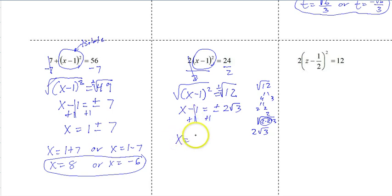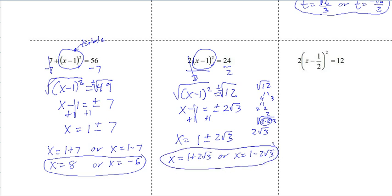So x equals, and like I said before, always leave that plus or minus on the far right, so it's 1 plus or minus 2 radical 3. So we get x equals 1 plus 2 radical 3, or x equals 1 minus 2 radical 3. And since we cannot combine these, they are not like terms, we're finished.